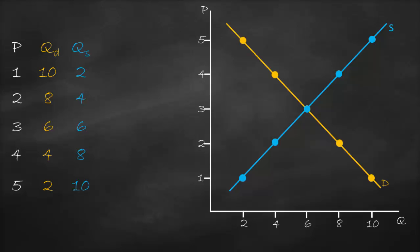Let's look at the table first. Can you tell me where is our equilibrium point? Equilibrium means that quantity demanded is equal to quantity supplied. If you look at the table, you'll discover that at a price of 3, our quantity demanded is equal to quantity supplied — both equal to 6. That's why we call it equilibrium: our equilibrium price is 3 and our equilibrium quantity is 6.